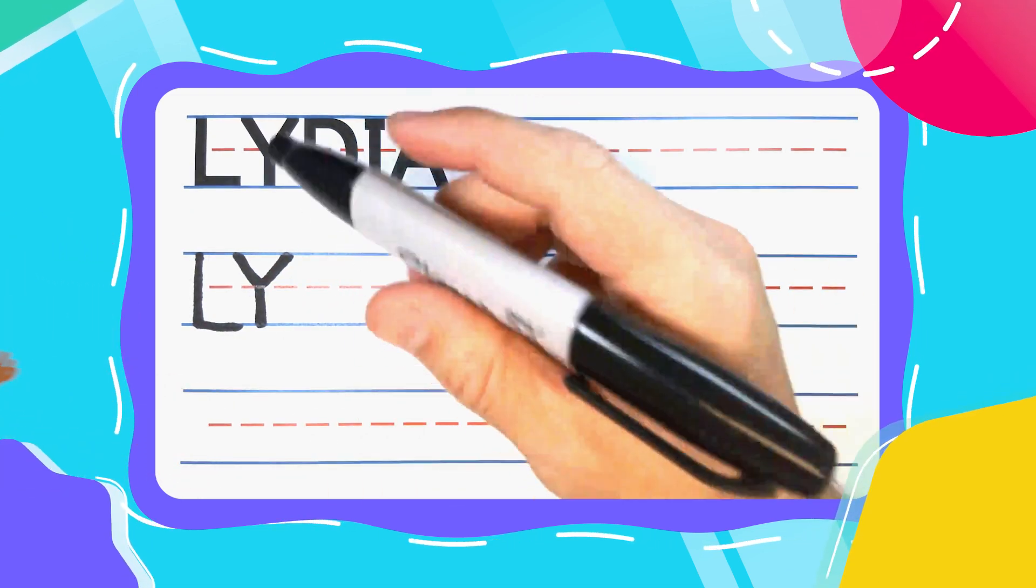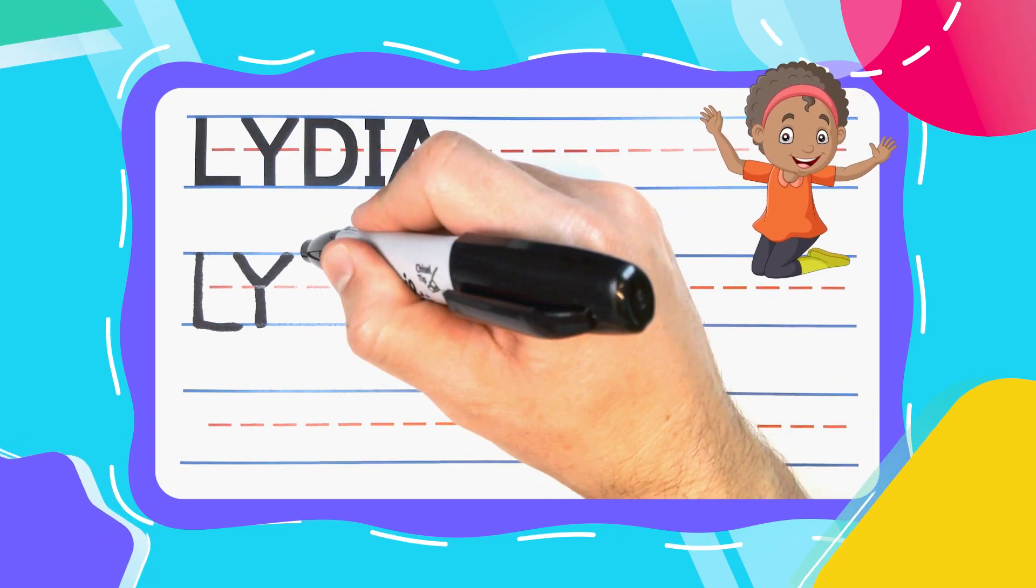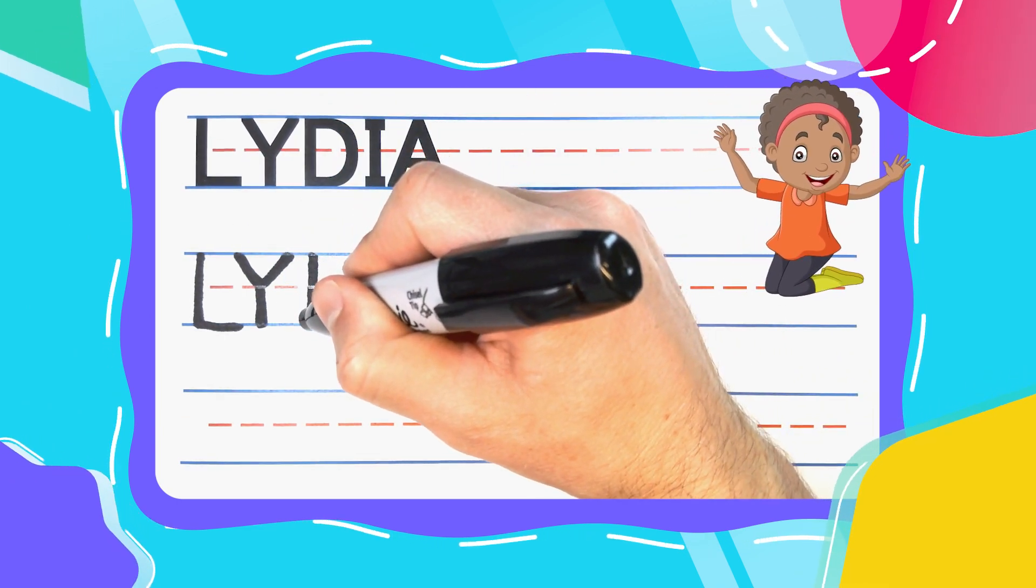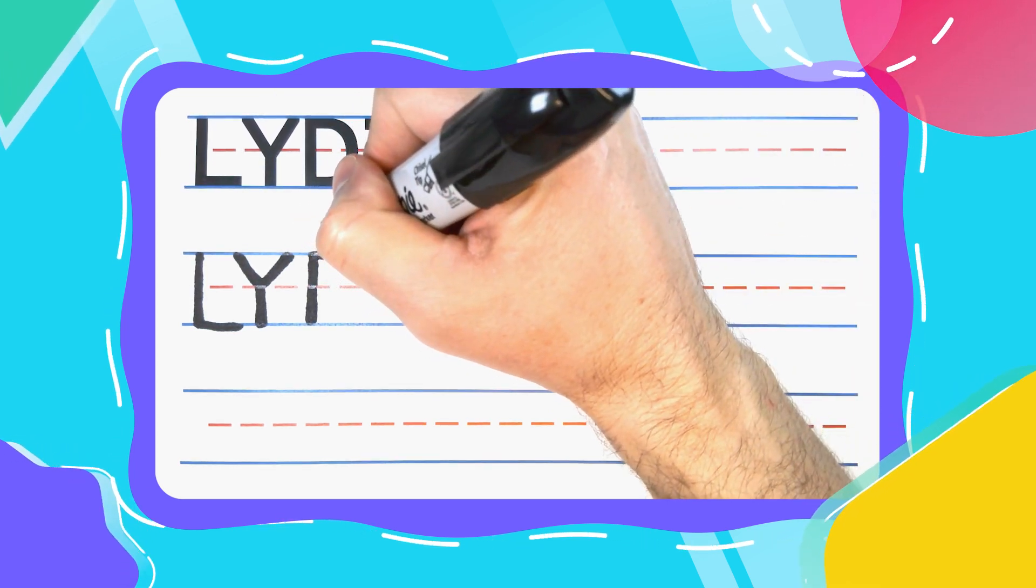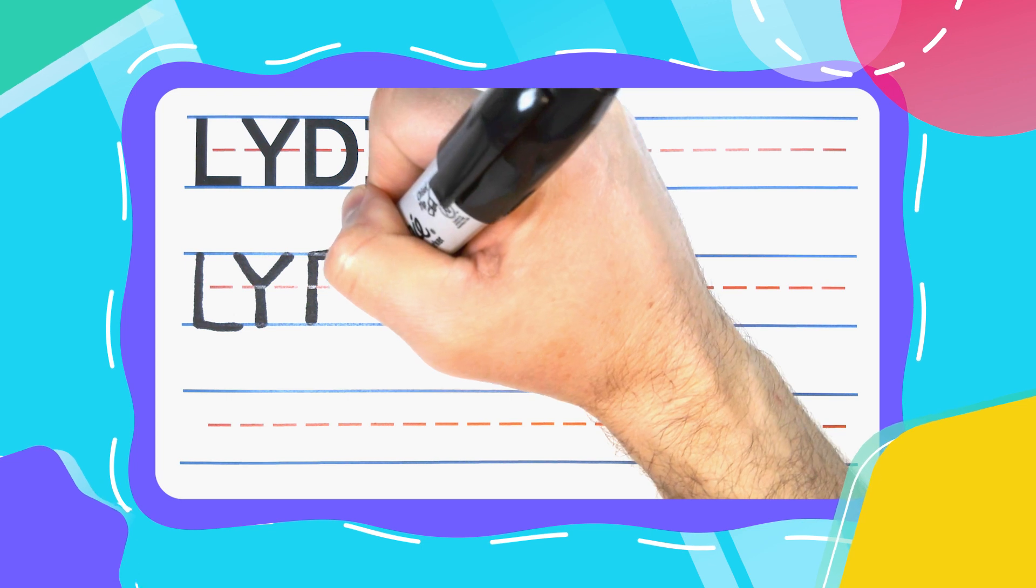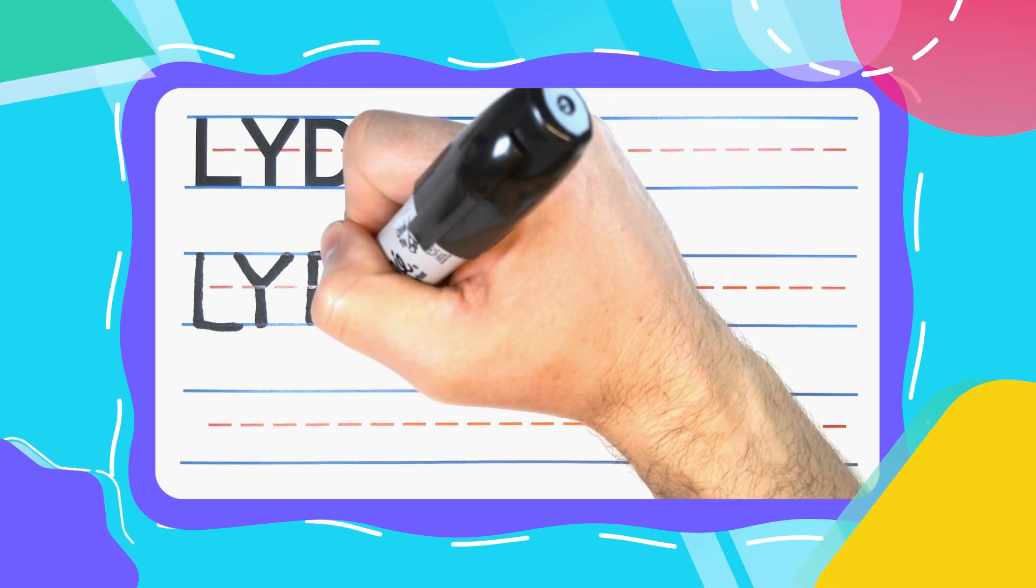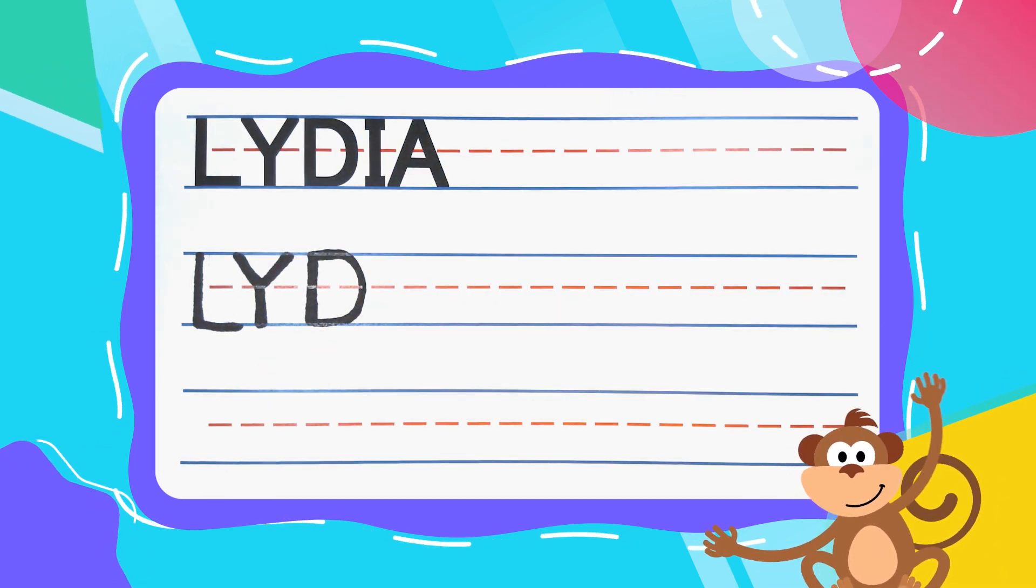The next letter is the dancing D. And dancing D's start with a straight line down. Then come back to the top and dance out to the right. Do a big curve and when you touch that bottom line come straight back to the left to complete your dancing D.